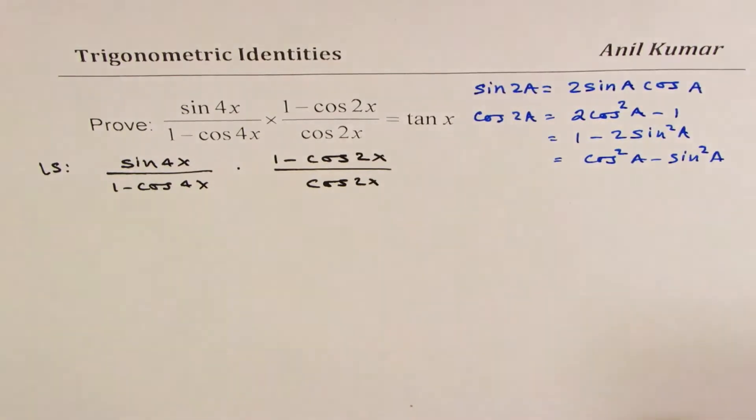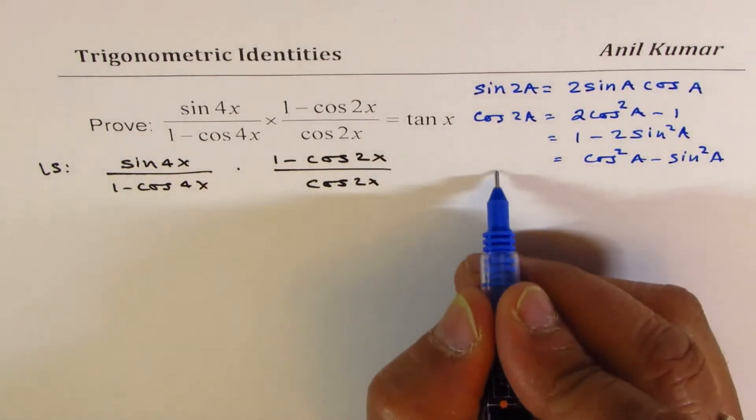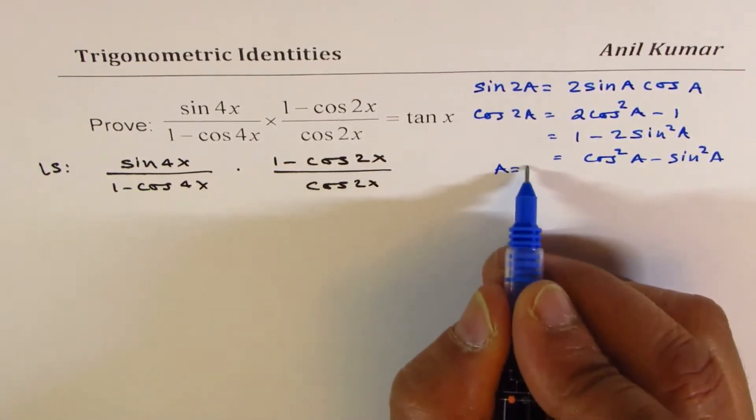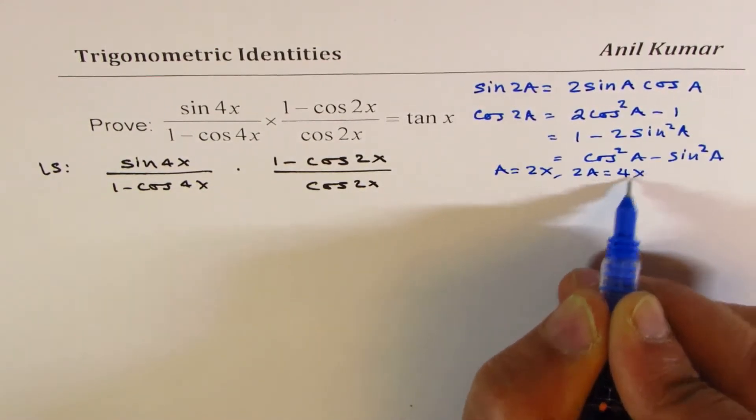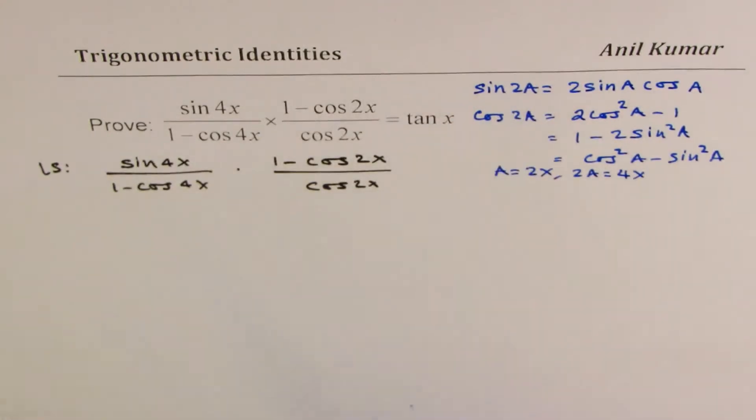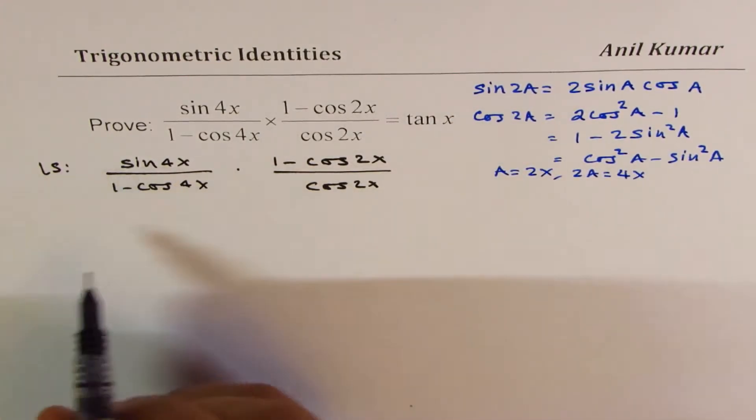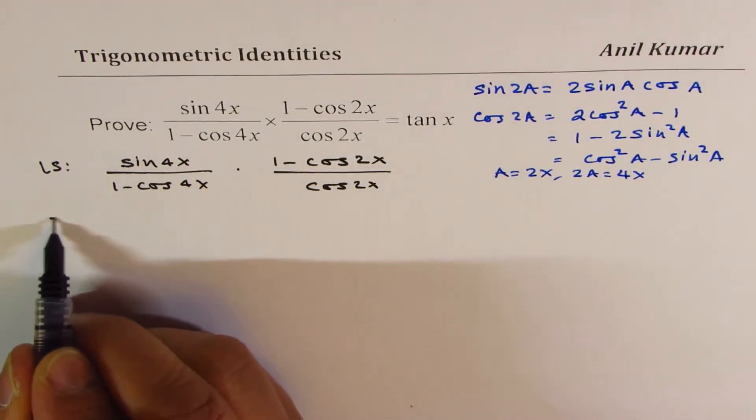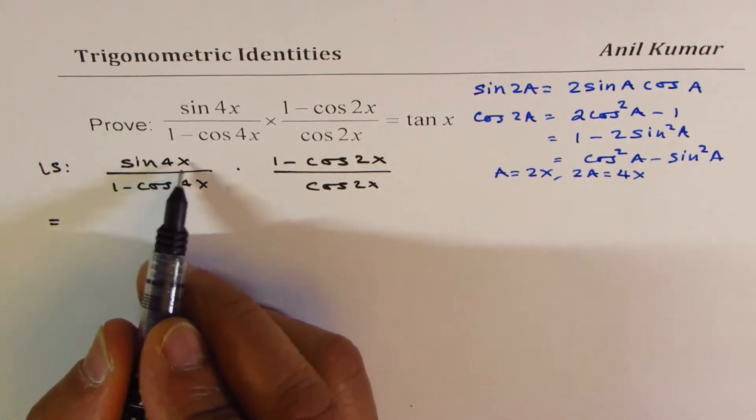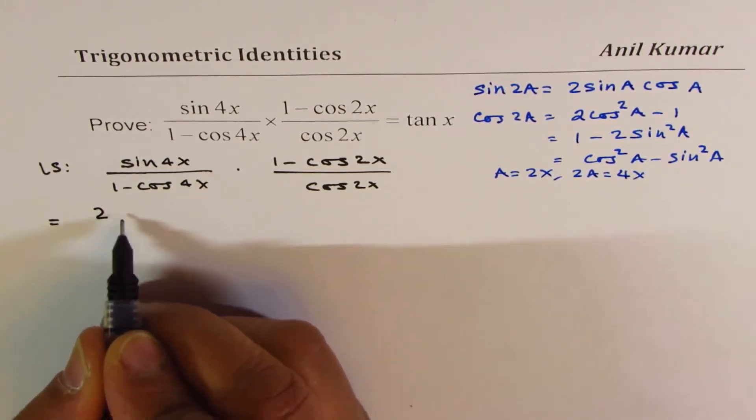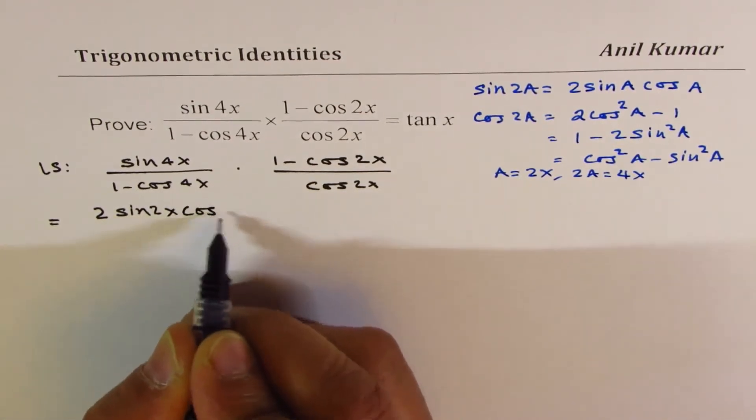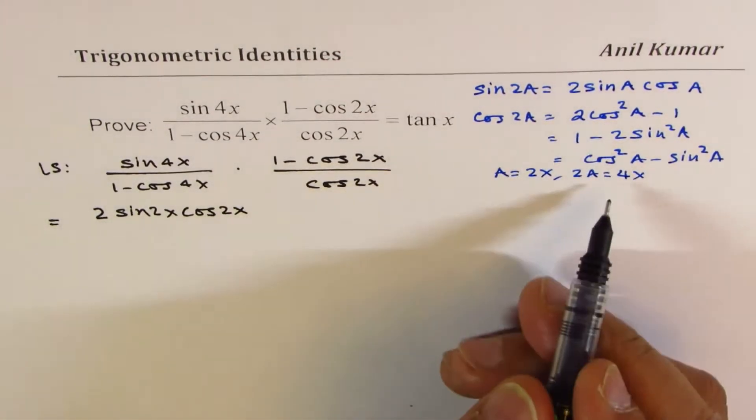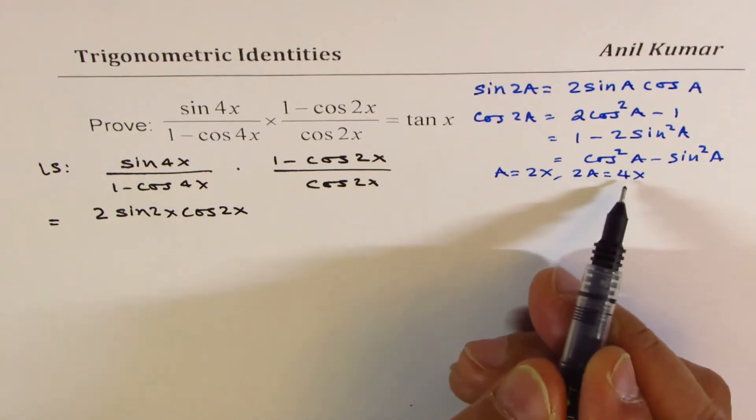Now, if I say that a for me is equal to 2x, then 2a is 4x. So I can apply this formula here, writing the left side as equal to sine 4x could be written as twice sine 2x cos 2x. So that formula with a as 2x, 2a is 4x.